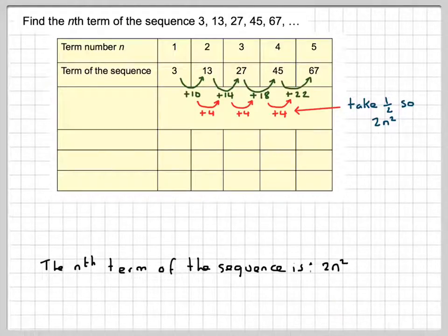So down here, we're now going to work out 2n squared. So when we've got 1, 1 squared is 1, 1 times 2 is 2. 2 squared is 4, 4 times 2 is 8. 3 squared is 9, 9 times 2 is 18. 4 squared is 16 times 2 is 32. And 5 squared is 25 times 2 is 50.